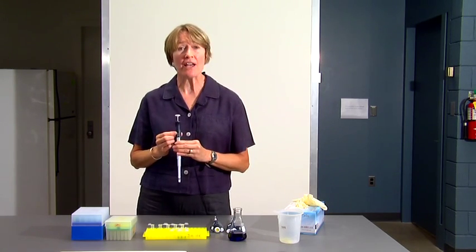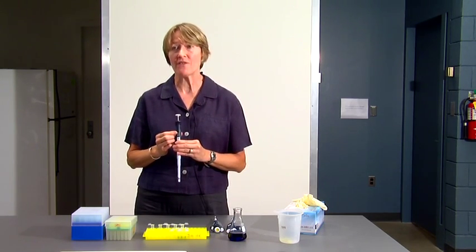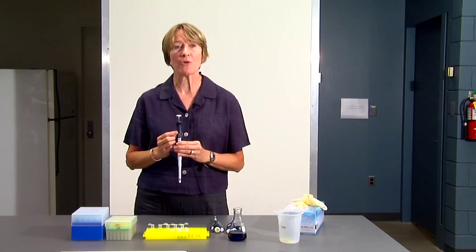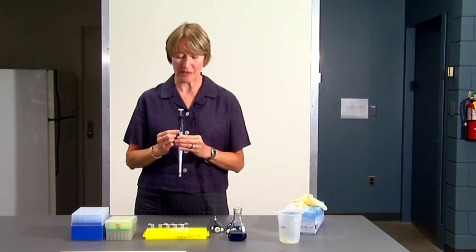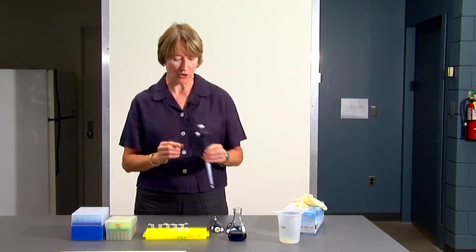If you wanted 500 microliters, that would be 050 on the P1000. So remember, the red number is thousands, and you have to make sure that you know how to set the pipet when you are setting your volume.